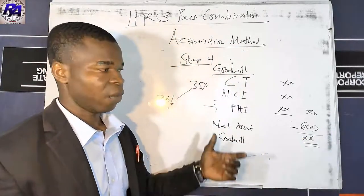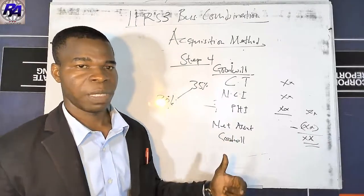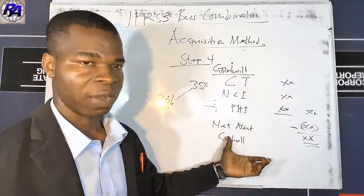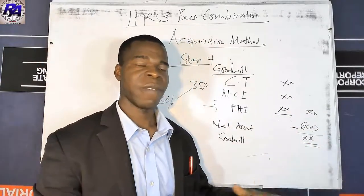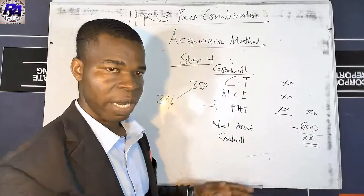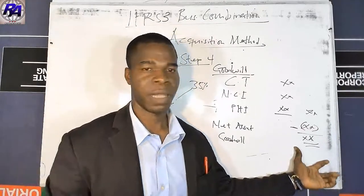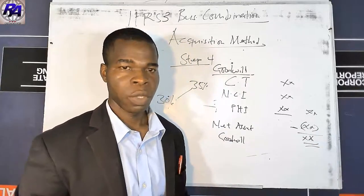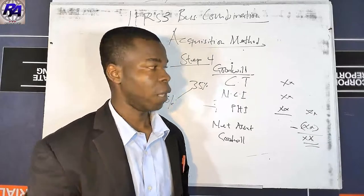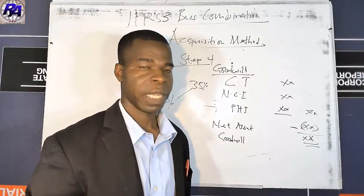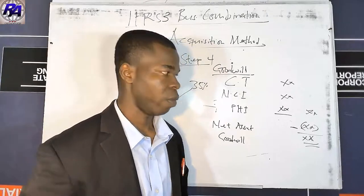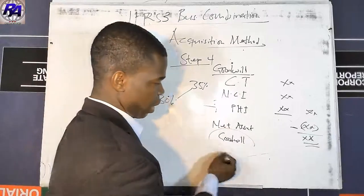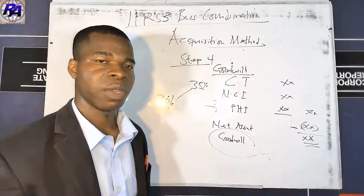If the result is negative, we call it gain on bargain purchase. You should first go back and recalculate to check for errors. If the calculation is confirmed correct, the gain on bargain purchase is immediately recognized in profit or loss as income to the acquirer or parent entity.